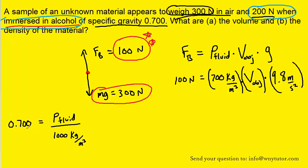We plug the given value for the specific gravity in here, and when we solve for the density of fluid, we get 700 kg per meter cubed. So that's where the density of the fluid is coming from.